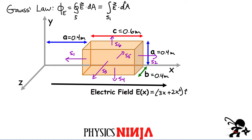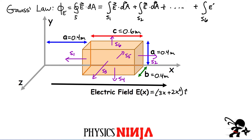An integral over a closed surface can now simply be written as the sum of the integrals over individual surfaces. That's going to simplify things a lot. It might not look like it because now I have six terms to evaluate, but we're going to see that a lot of those terms are going to be equal to zero. I have to integrate the electric field over the area of each one of those surfaces.